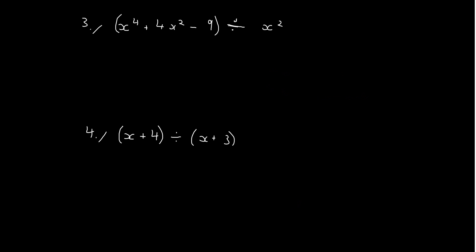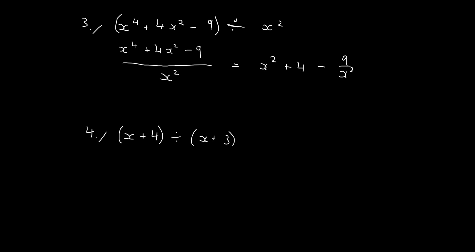So let's do an example of that — one where we're not going to get a polynomial. We've got x to the power of 4 plus 4x squared minus 9 over x squared. And we get x squared plus 4 minus 9 over x squared. If you look at this part here, you can see that this makes it not a polynomial because this is like 9x to the minus 2, and you can't have negative integers in a polynomial.